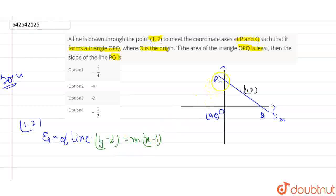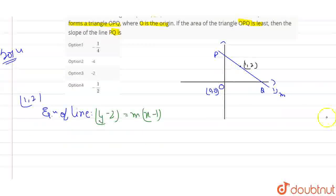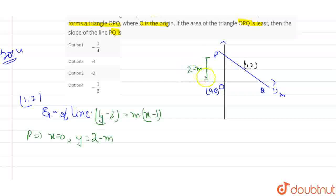Now what I will do, if I have to find the values of point P and point Q, we know that at point P, x becomes 0. So for P, x becomes 0. Therefore, y will be exactly 2-m. So this distance will be 2-m from the origin.